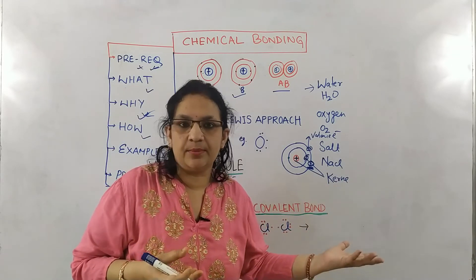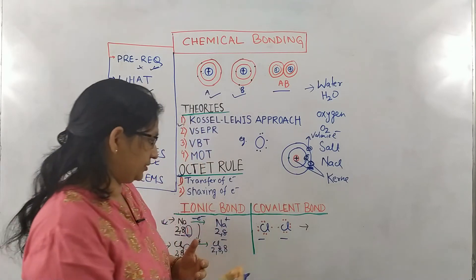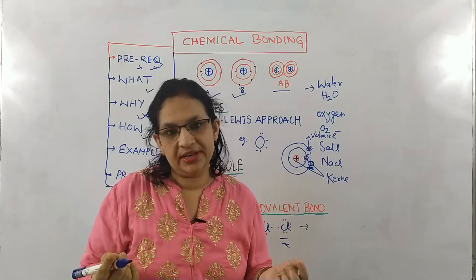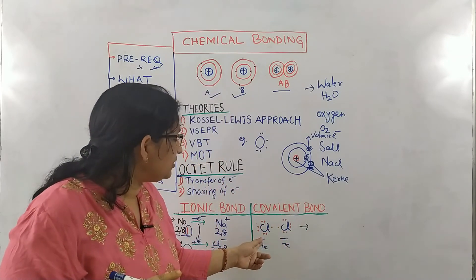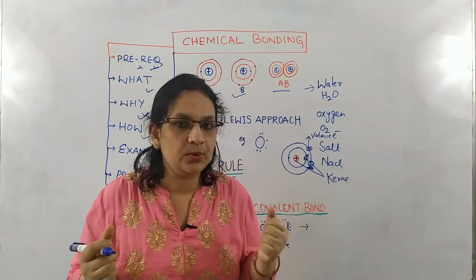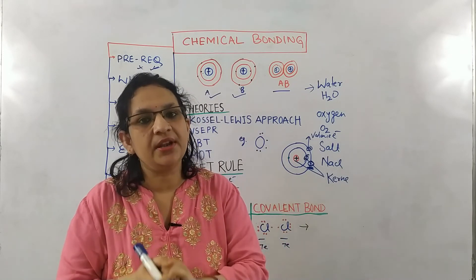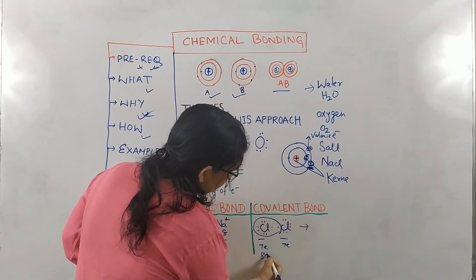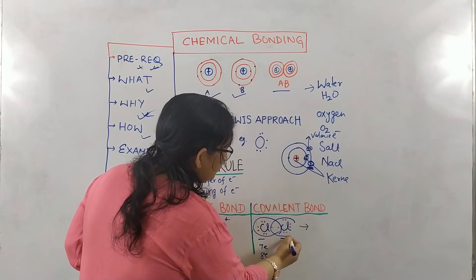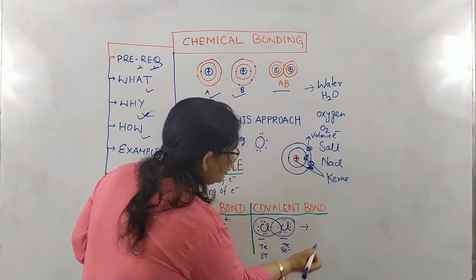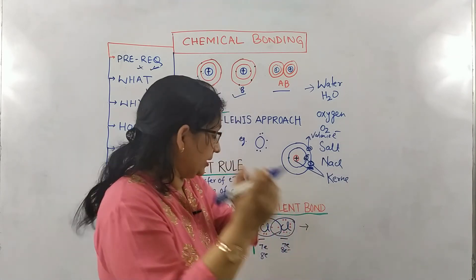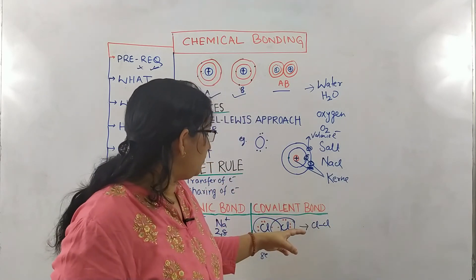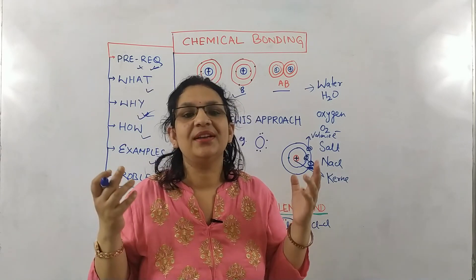Now let us see another example — let us take two chlorine atoms. Each chlorine atom has seven electrons, and they both require one electron each for obtaining the octet. Neither this chlorine wants to lose an electron, nor the other chlorine wants to lose an electron. So what will they do? They have only one option left: by sharing the electron they can obtain the octet. This chlorine will share one electron with the neighboring chlorine — now it has eight electrons. The other chlorine will also share one electron with its neighbor — now it also has eight electrons. They have become a molecule of chlorine. This type of bond formed by sharing of electrons is known as a covalent bond.